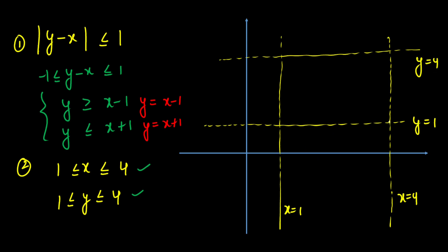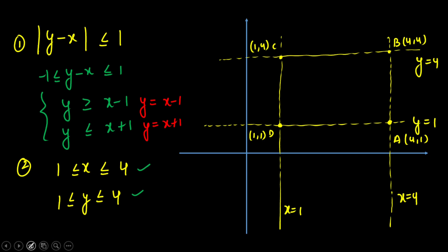Now marking all the corner points: point A is (4,1), point B is (4,4), point C is (1,4), and point D is (1,1). Now I am going to draw the two diagonal lines within this square.